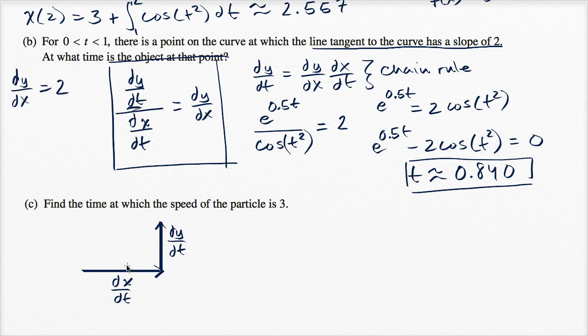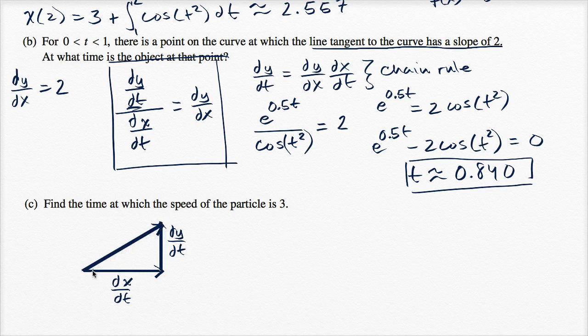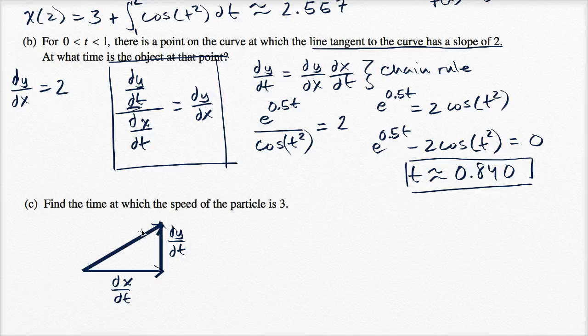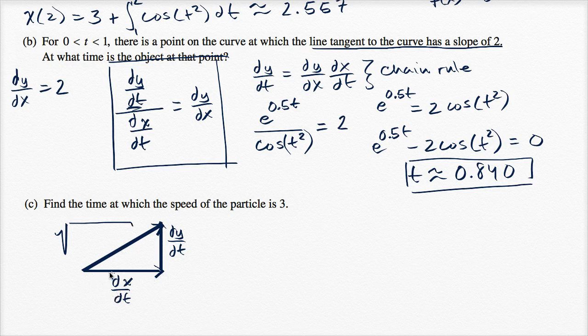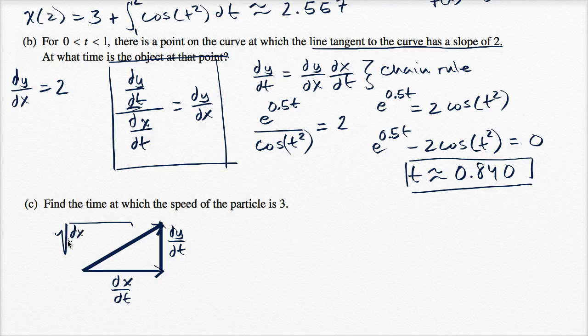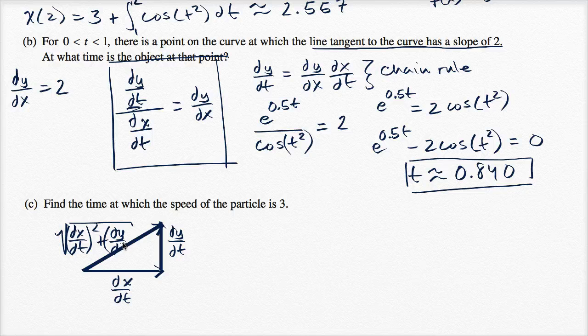Then the speed is going to be the magnitude of the sum of those two vectors. So this right over here, the magnitude of this vector right over here is going to be the speed. The Pythagorean theorem tells us it's going to be the square root of your X component of velocity squared. So dx dt, the rate at which X is changing with respect to time, squared, plus your Y component, dy dt squared. This right here is the speed. And we need to figure out what time is this thing equal to three.